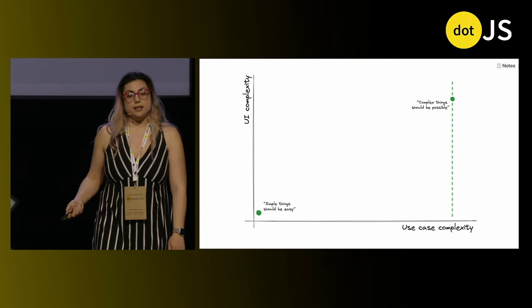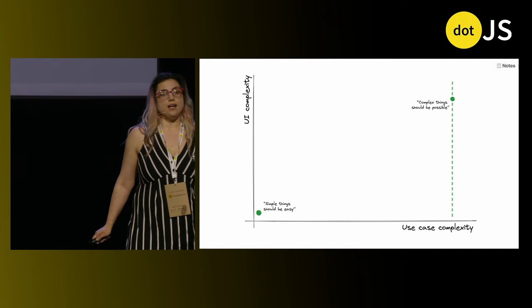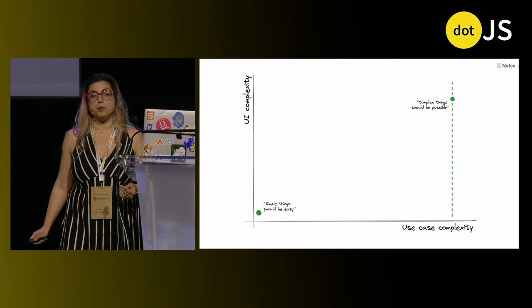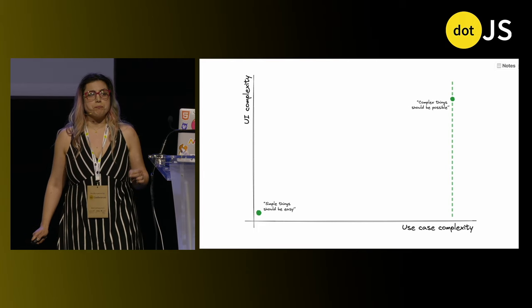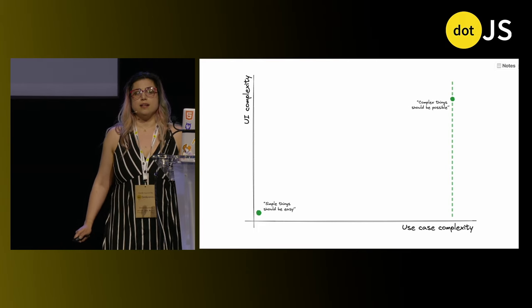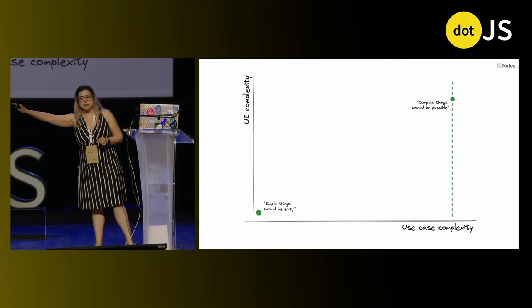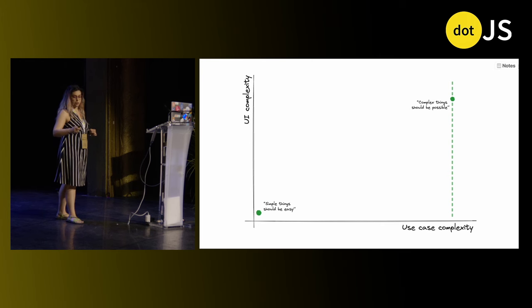So back to Alan Kay's maxim — we can visualize this on a plane where the Y axis has UI complexity, and the horizontal axis has the complexity of the task people are trying to accomplish. Alan Kay's maxim is basically two dots: simple things being easy means there should be a point in the lower left, and complex things being possible means there should be a point somewhere on the far right. The lower down the better, but high up is okay too.